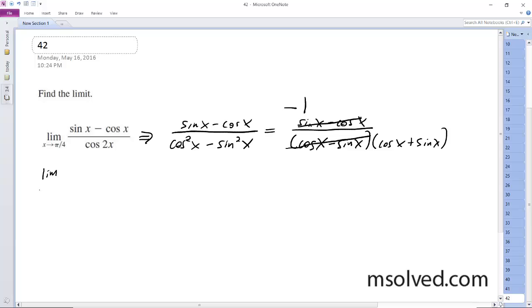So what you get is the limit as x approaches pi over 4 of negative 1 over cosine of x plus sine of x. And I'm going to go ahead and plug this in.